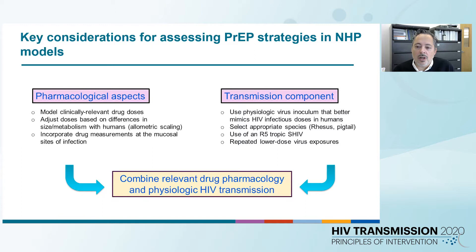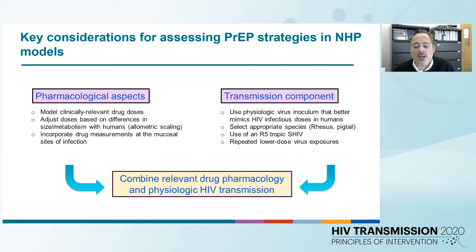And then we have the transmission component, which is equally important. The models use a physiological variant that mimics HIV infection in humans. We need to make sure that we select appropriate species. For instance, pig-tailed macaques are better suited for vaginal transmission studies. When we combine the pharmacological aspects and transmission components, we end up with a model that is highly relevant to PrEP studies.